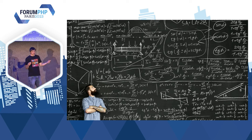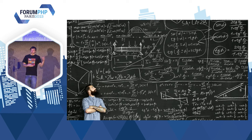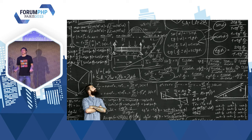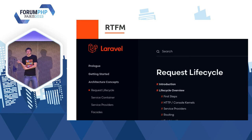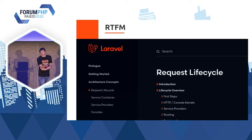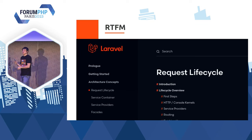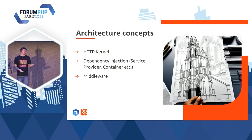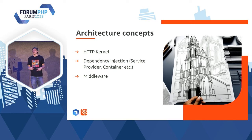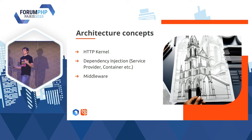Maintenant qu'on a vu tout ça — API Platform est disponible sous forme de provider/processor, on a un subtree split — maintenant il faut mettre tout ça dans Laravel. On va commencer par aller lire la documentation. Dans la documentation de Laravel, on retrouve dans les concepts d'architecture tout ce dont j'ai besoin : des notions de kernel HTTP, des notions d'injection de dépendance avec un service provider, de la middleware HTTP — on peut faire vraiment plein de choses.